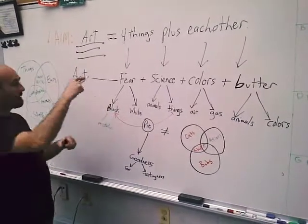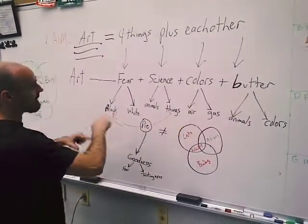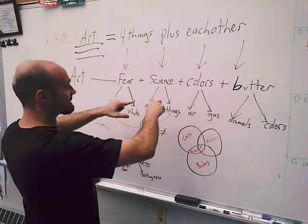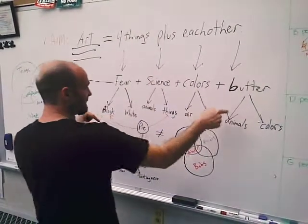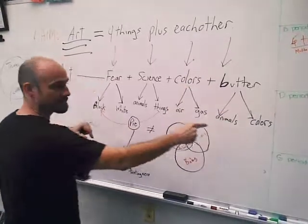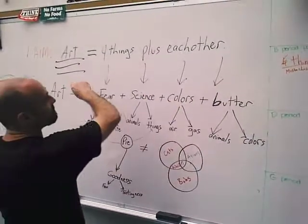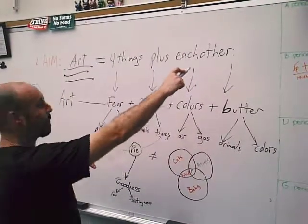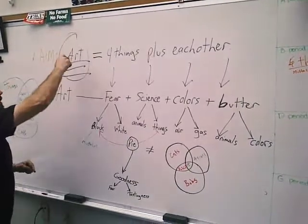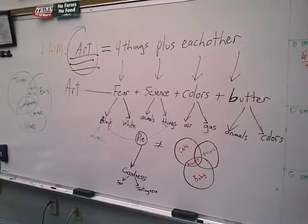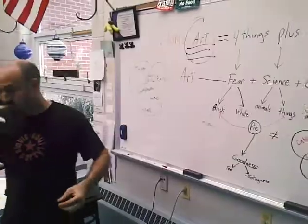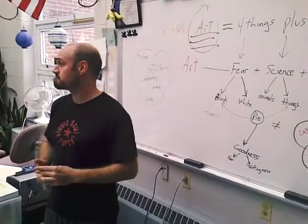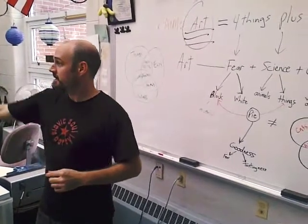Fear plus tastiness is goodness, which is also pie, which is between things. This is part of science and black, which is part of fear, which all goes in together with fear plus science plus colors, air, gas, and butter, animals, and also colors—the four things plus each other. Is that why we're here today? Thoughts? Yes.